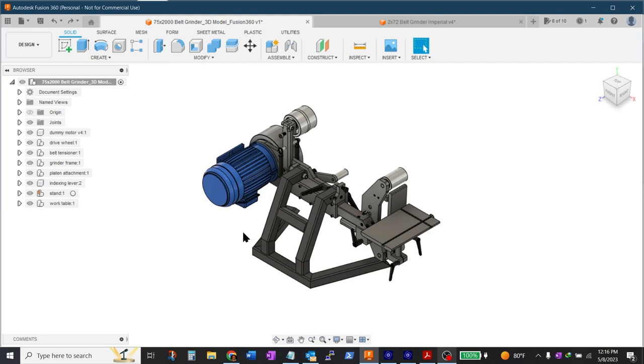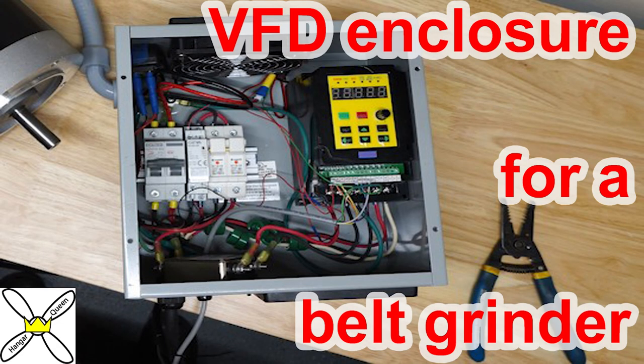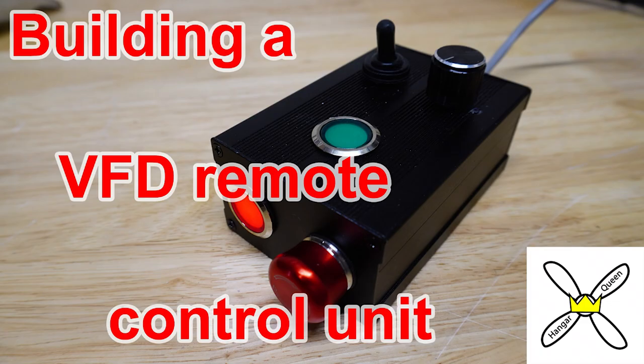So I reached out to Phil to ask for the full F3D file including the sketches and history and while I was waiting for his reply I went on and built my VFD enclosure and the remote that I've shown in my part one and part two of this series.